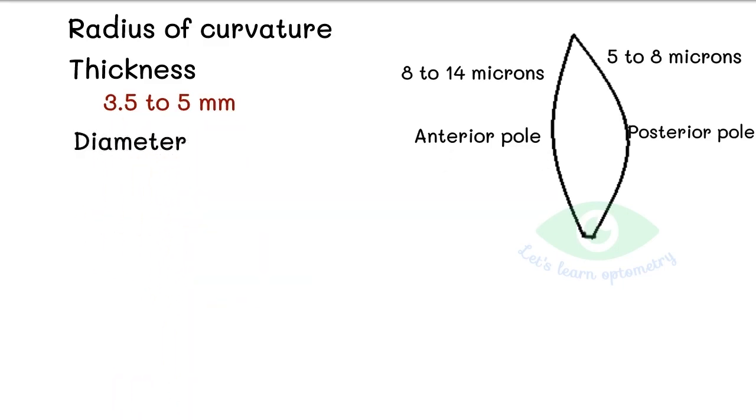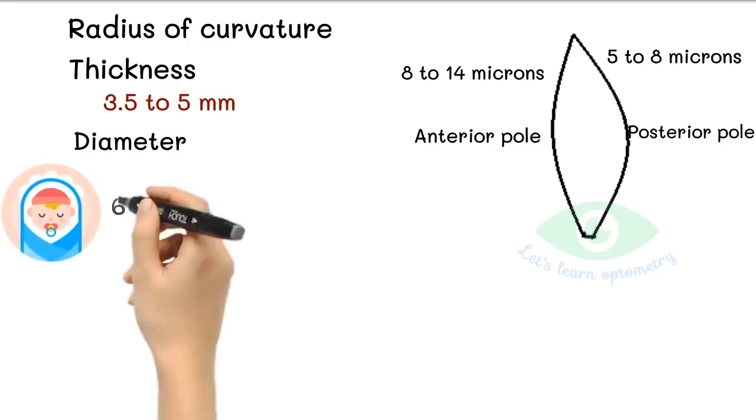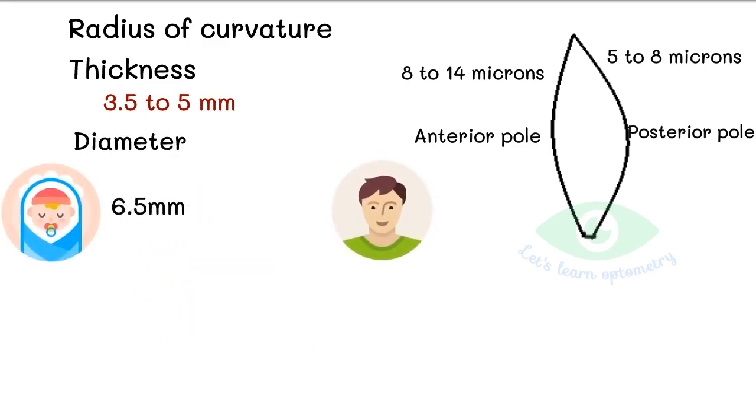Diameter: The lens diameter is 6.5 mm. The diameter reaches 9 mm during the teenage years and does not change significantly after that.